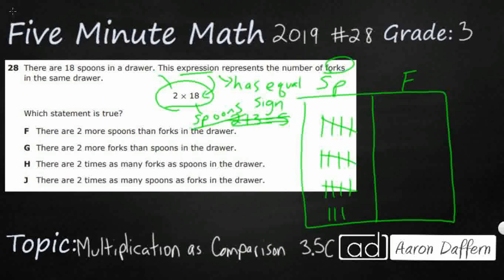So if I did want to turn this into an equation, I could probably say that forks or F equals 2 times 18 because it says the number of forks can be expressed here. So the number of forks equals 2 times 18. Well, let's look to see what our answer selections are and see what equations we get there.